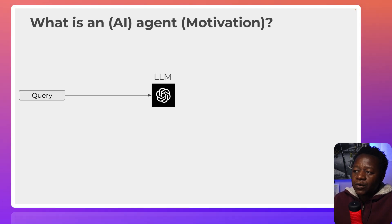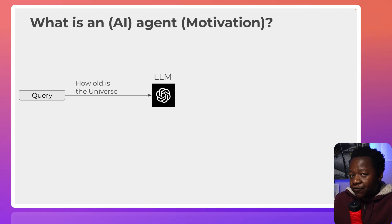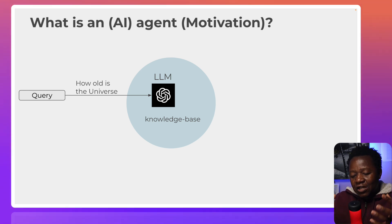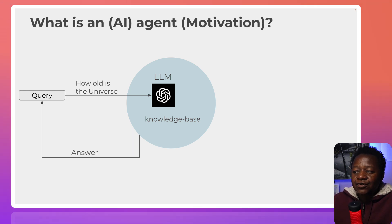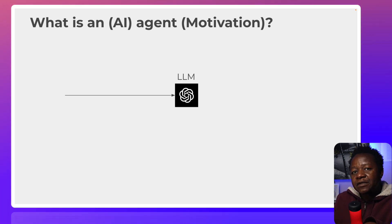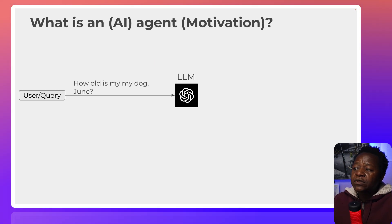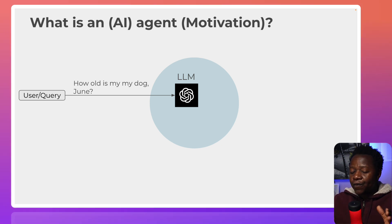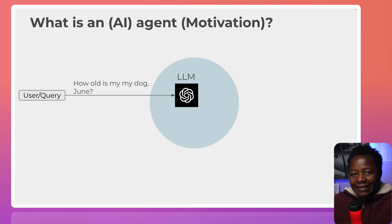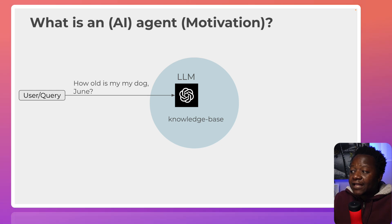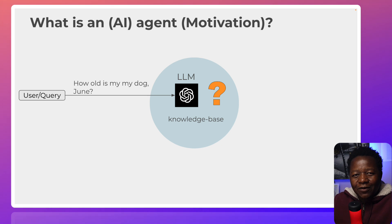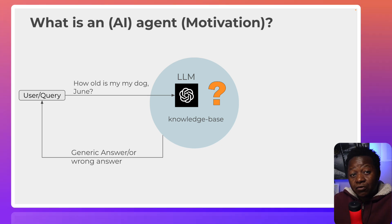If you look at a large language model, we can pass in a query like 'how old is the universe?' and the model, because it has this knowledge base, will be able to answer. But what if we ask 'how old is my dog June?' The large language model doesn't know who June is — it might think June is the month of June. It goes through its knowledge base and doesn't have the context, so it will give you the wrong answer.